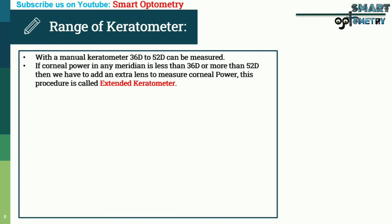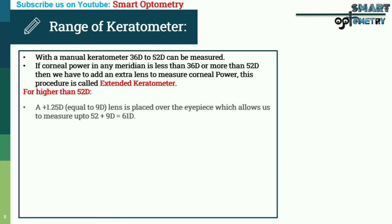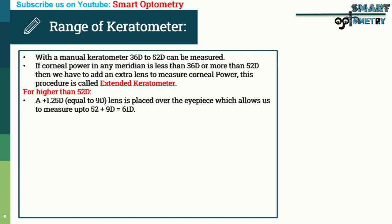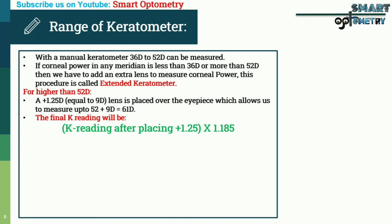For higher than 52 diopters, a +1.25 diopter lens (equal to 9 diopters) is placed over the eyepiece, allowing measurement up to 52 + 9 = 61 diopters. However, the reading obtained after placing the +1.25 diopter lens is not the actual corneal dioptric power. We need to modify this reading using the formula: keratometer reading × 1.185. For example, if the reading with +1.25D is 48 diopters, the final power = 48 × 1.185 = 56.88 diopters.